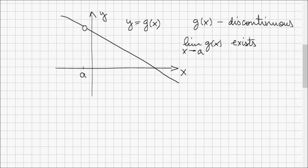Keep in mind that a function can be discontinuous even if a limit exists for that function at a given value of x. So we say that a limit of g(x) exists when x approaches a, as you can see here,